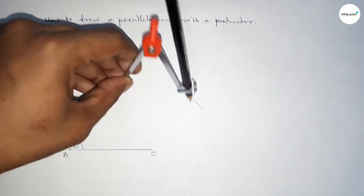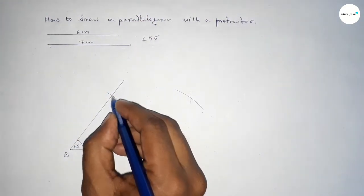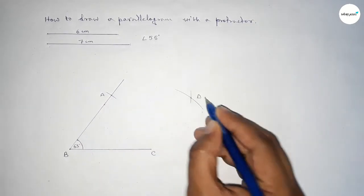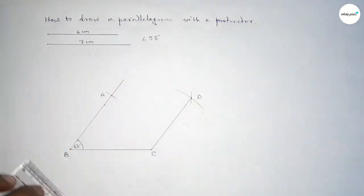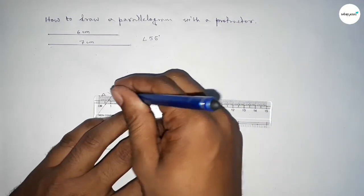Putting the compass here and cutting here. Taking here point A and here D. First joining C and D, then joining A and D.